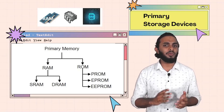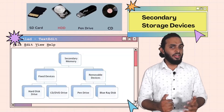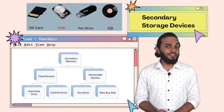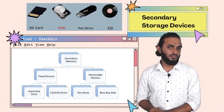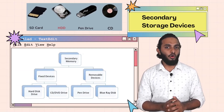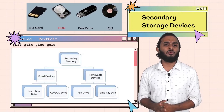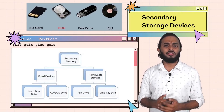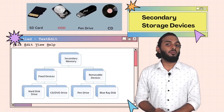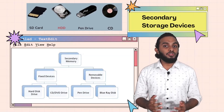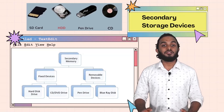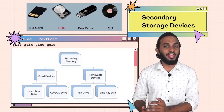Secondary memory includes hard disk, floppy disk, CD drive, and pen drive. Secondary device categories are fixed and removable. Fixed is the hard disk. Removable includes floppy, CD, memory cards, pen drive, and other devices. Secondary storage devices provide a huge volume of data storage. Primary memory is 2GB or 3GB, whereas secondary can be 1TB or 3TB.